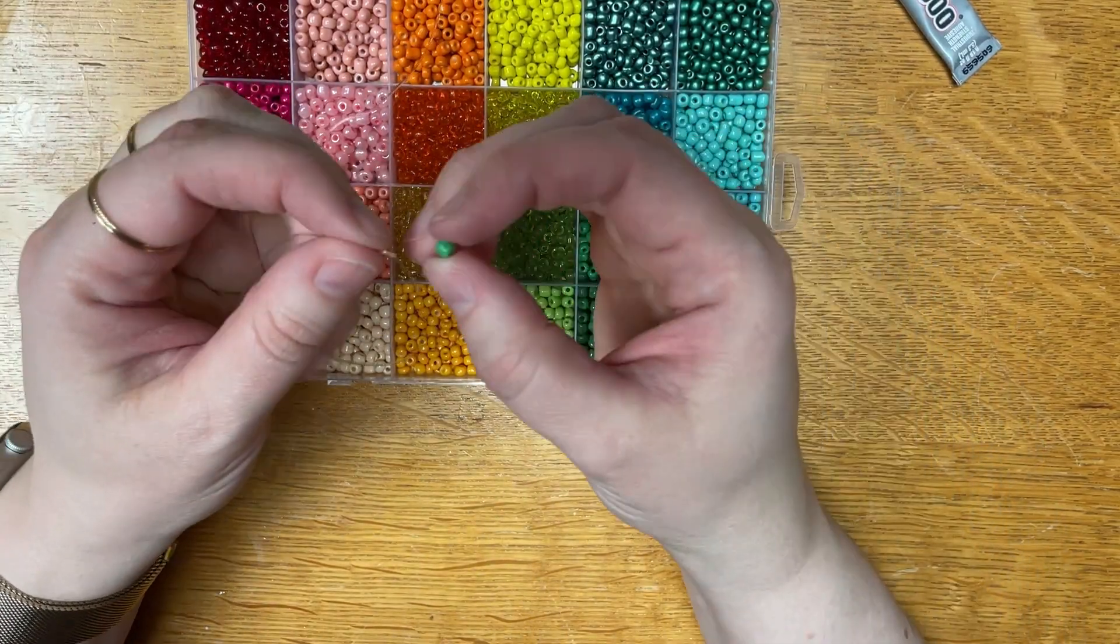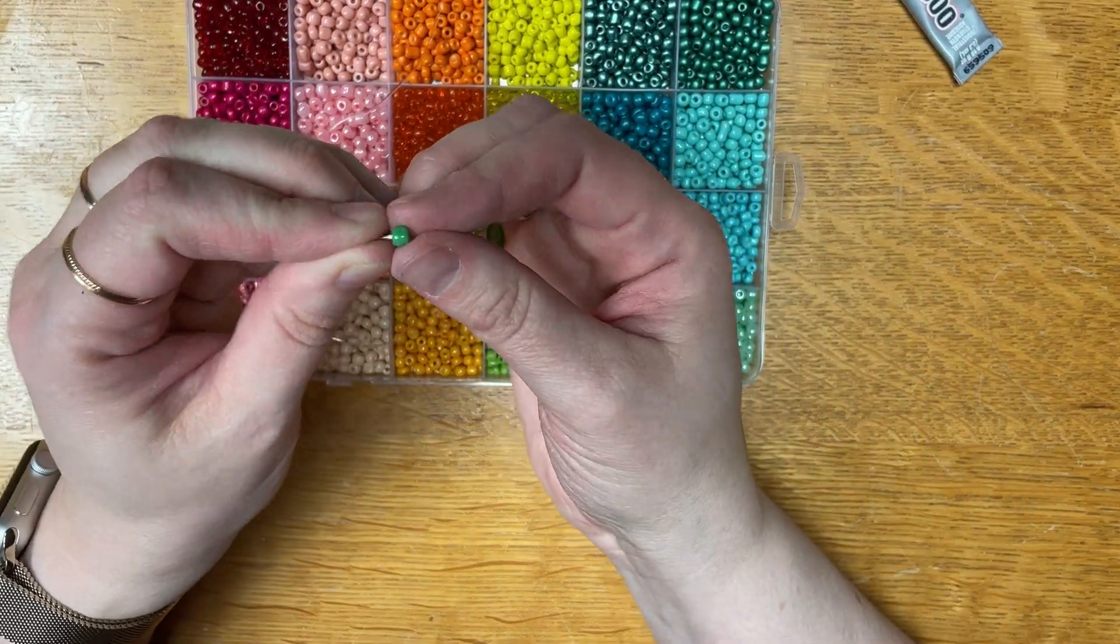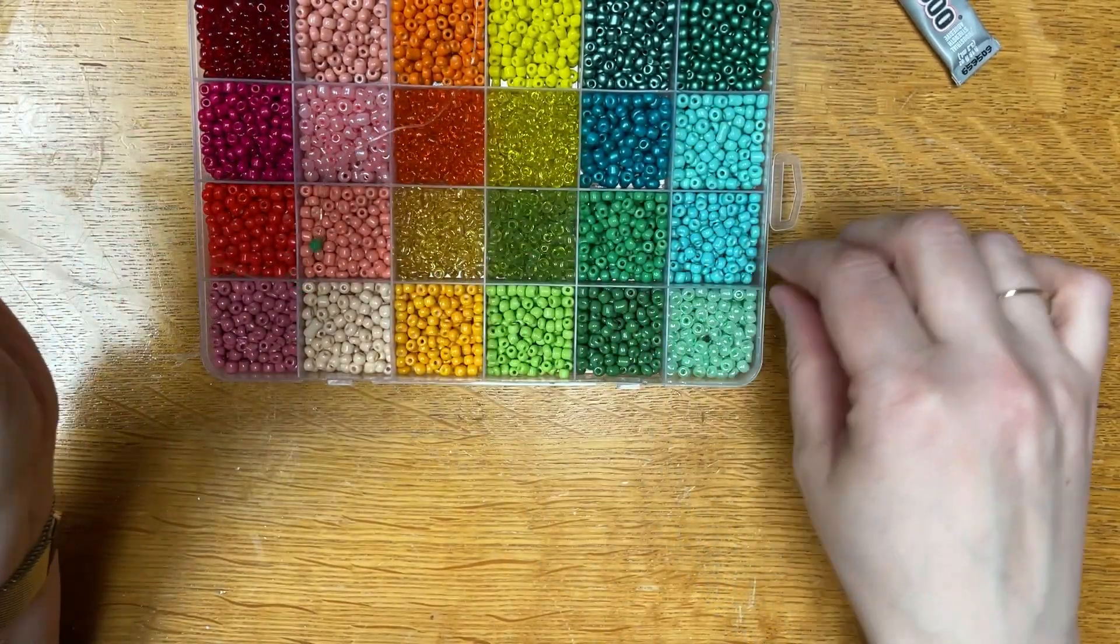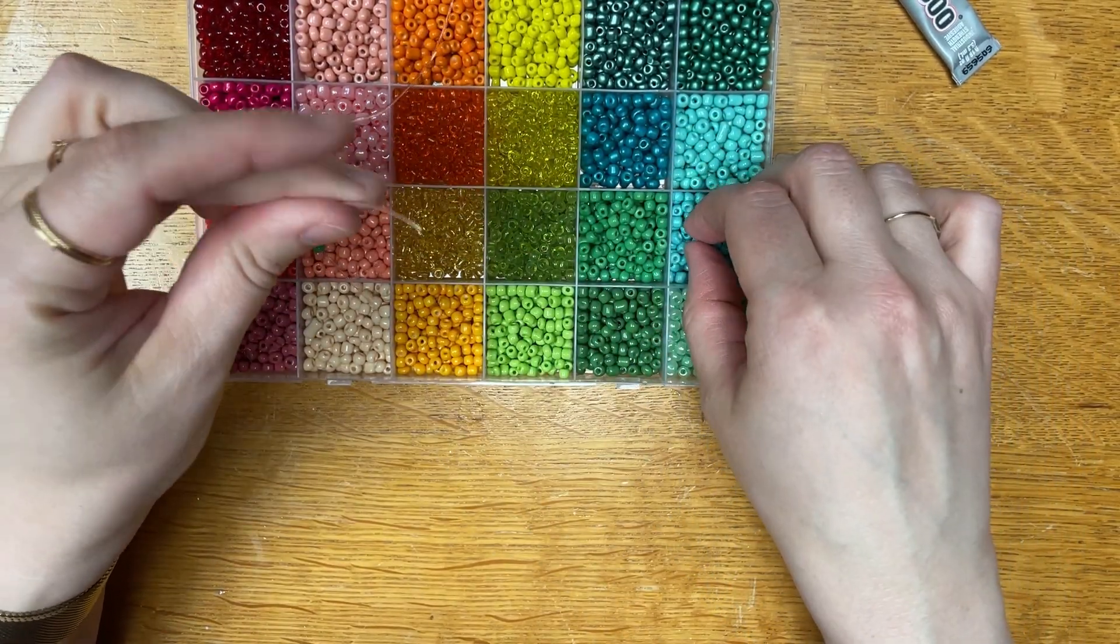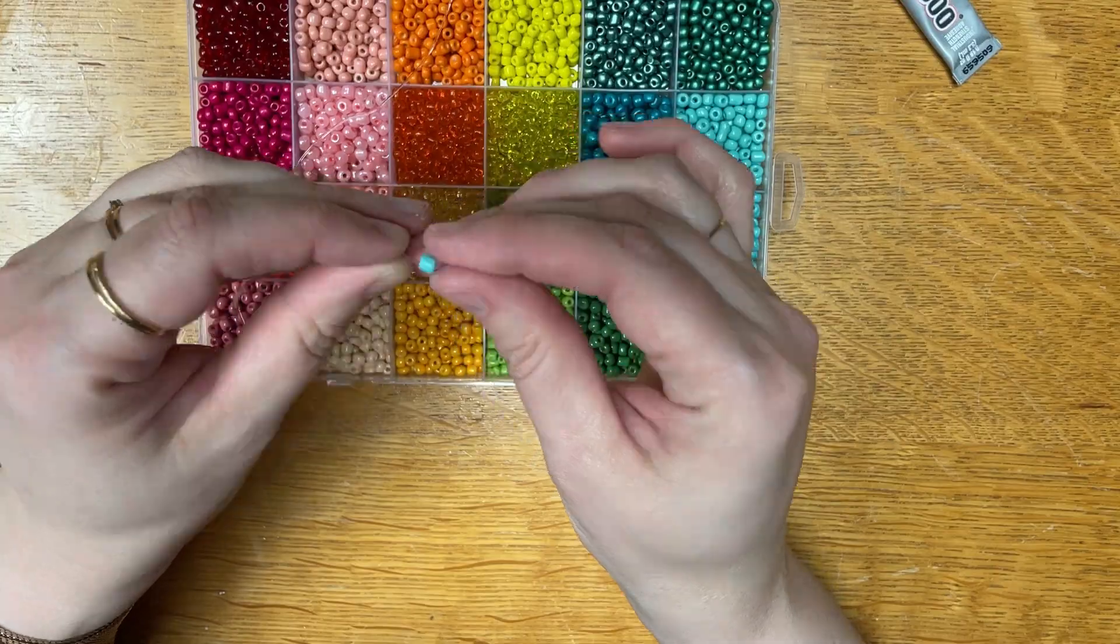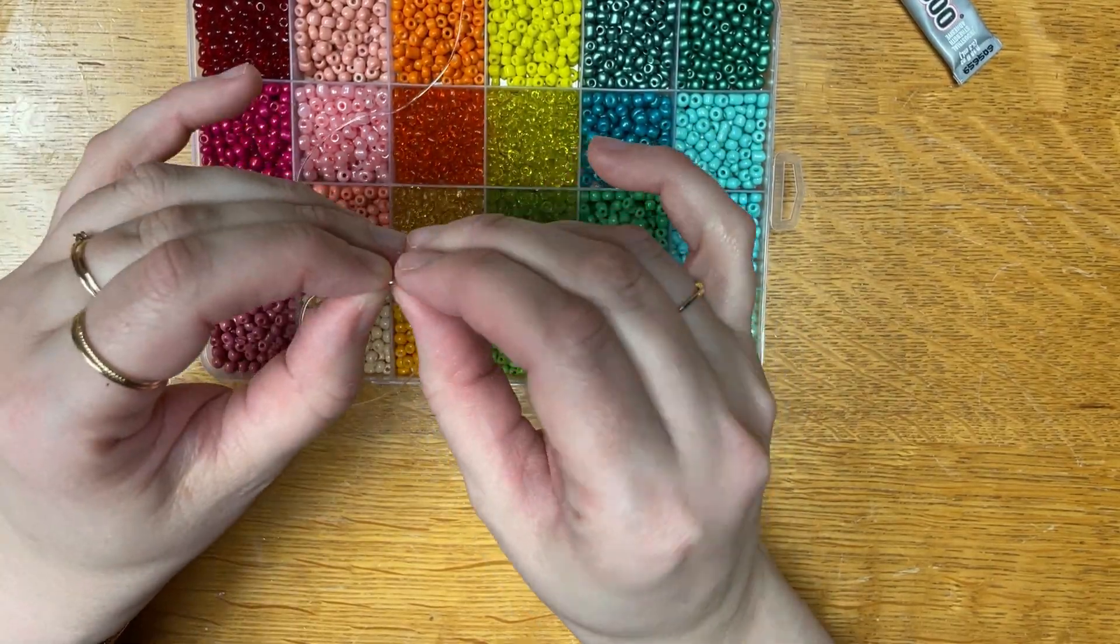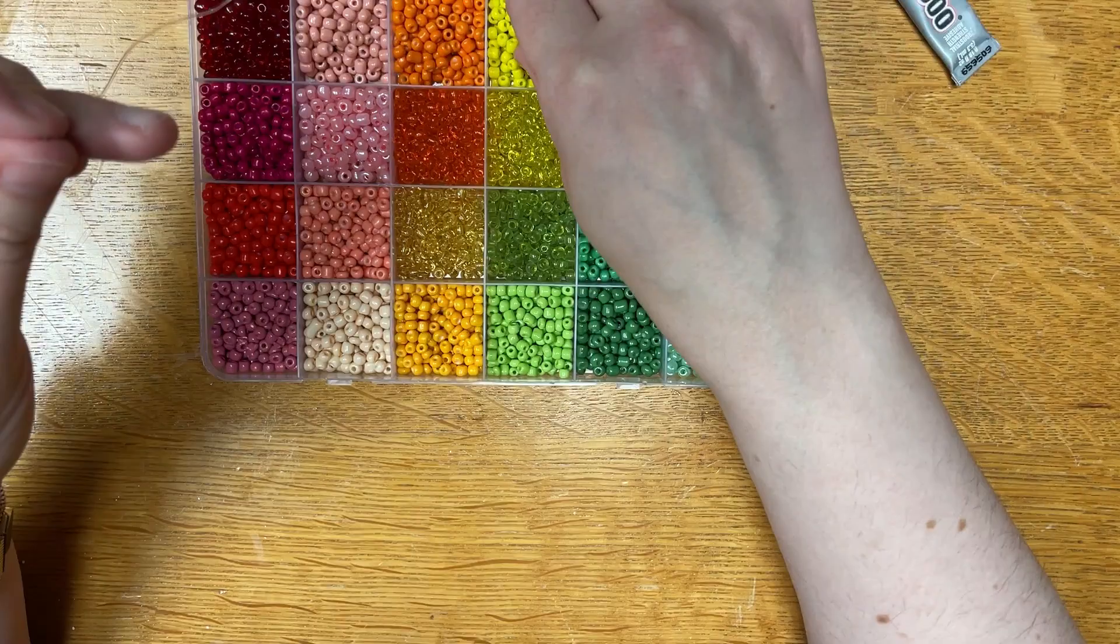You can also use a spring for that. You can find those at any craft store that has a beading section and they're very handy. You can do all kinds of different patterns or techniques when you string a bracelet.